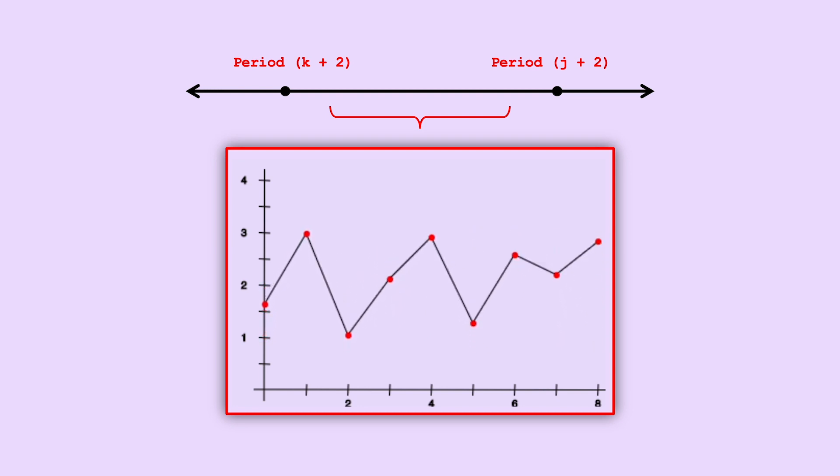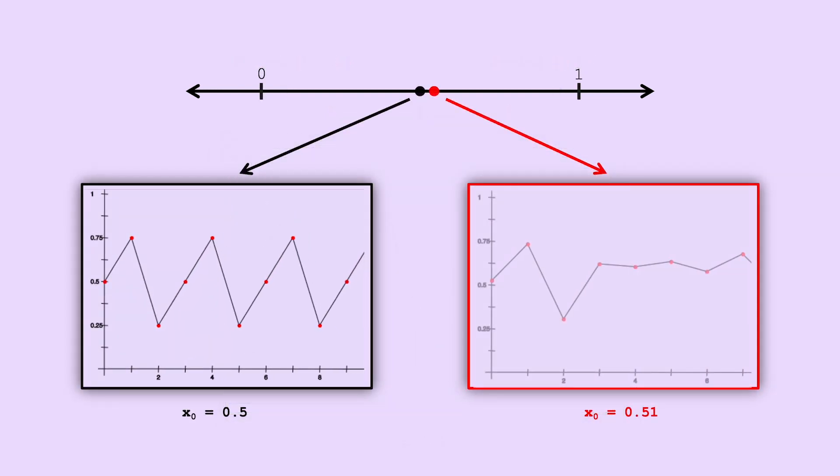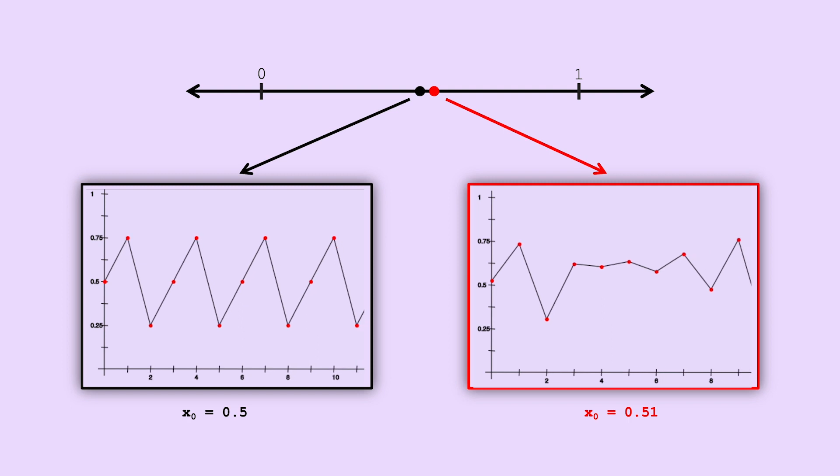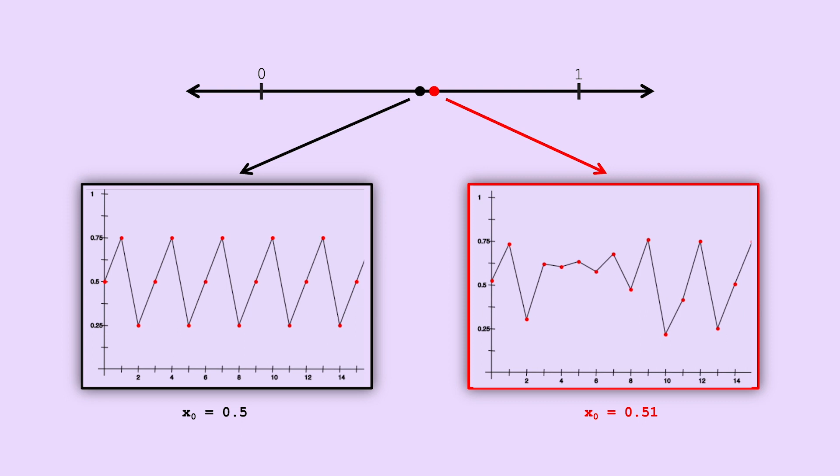Okay, so what does this mean? This implies from some initial point, if you move even a tiny bit or fail to measure this initial state with infinite precision, the resulting sequence may become very different from the initial sequence.